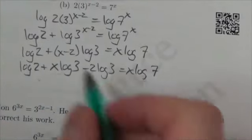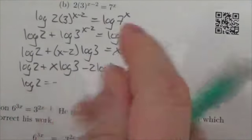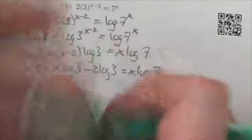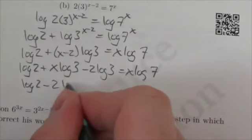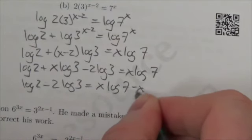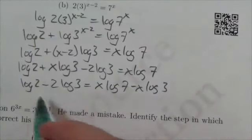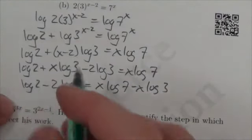Now I'm going to bring that x log 3 over to the other side. So I've got log 2, not is equal to, my mistake, that's minus 2 log 3 is equal to x log 7 minus x log 3. Now I am going to combine these together here.